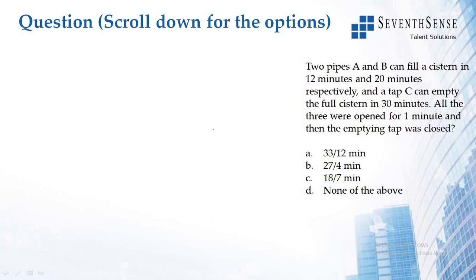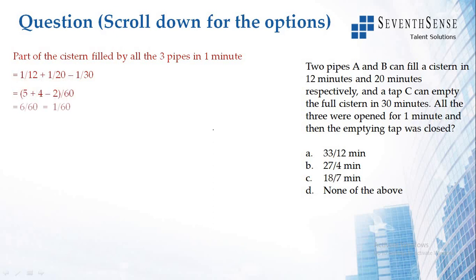First, we will find out for that one minute what is the part of cistern that is filled. So that is 1/12 from pipe A plus 1/20 from pipe B, and pipe C is emptying the cistern, so that is why it is minus 1/30. Now when we simplify this, you will get the answer as 1/60.